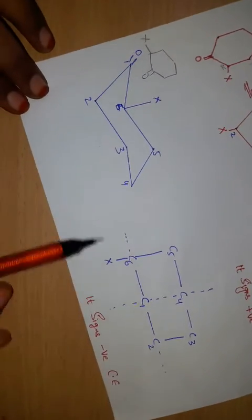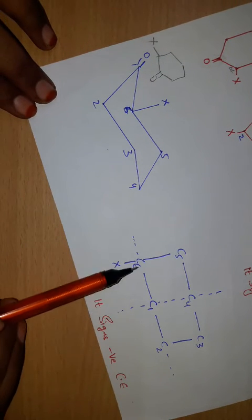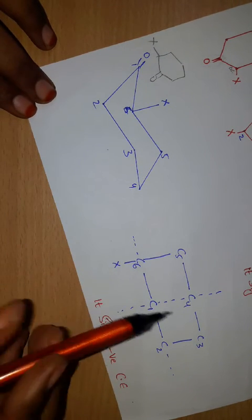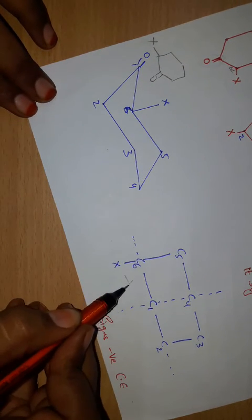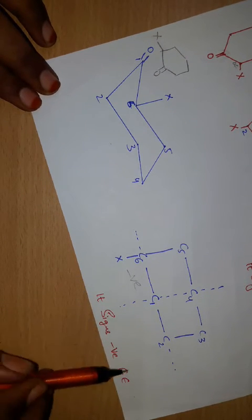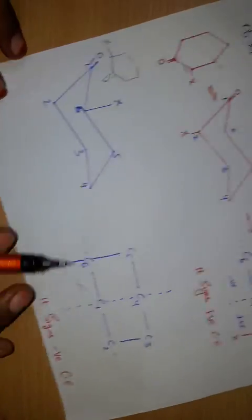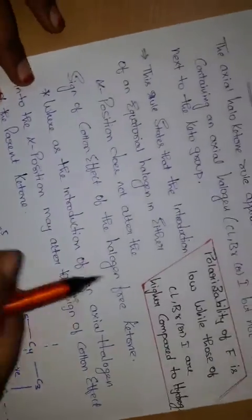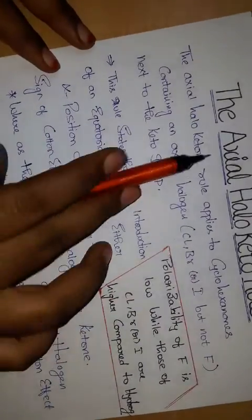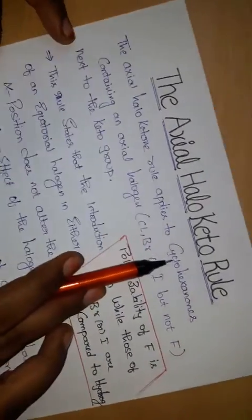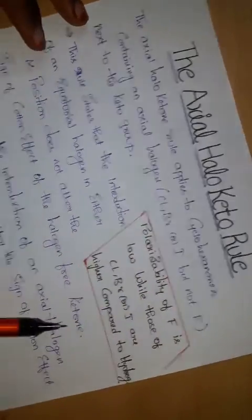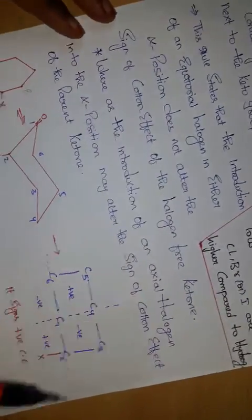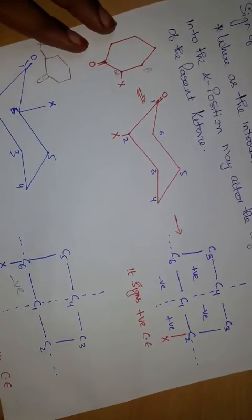Similarly, if the halogen is in the negative quadrant, it shows a negative Cotton effect. This is all about the Axial Halo-Keto Rule, which is very important for MSc students. Thank you.